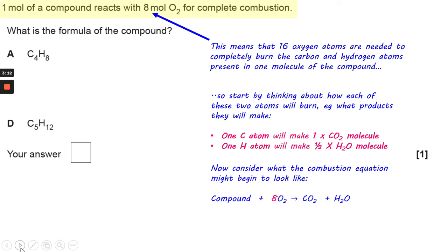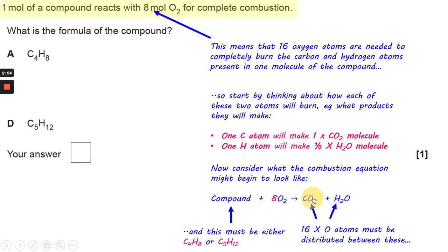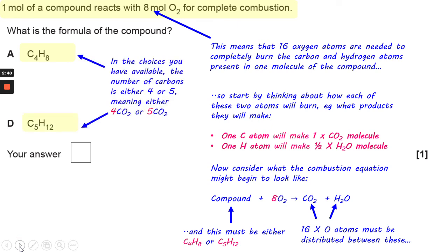Starting to put together a possible framework for what our equation might look like, and therefore what the formula of the compound might be, we put in H as our balancing number for oxygen. Looking at the products, we need to try to distribute 16 oxygen atoms between the carbon dioxide and the water. So your compound must be either C4H18 or C5H12. You've got four carbons available in A and five carbons available in D.